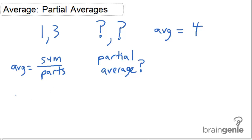What do we know here? We know that four is equal to the sum of all the numbers divided by the number of parts. And there's four parts. There's four numbers. Two of which we know, two of which we don't know.